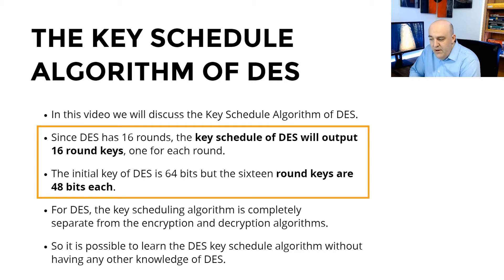Since DES has 16 rounds, that means the Key Schedule is going to be responsible for outputting 16 round keys, one for each round. So the initial key of DES is 64-bits, even though we're going to talk about later why it's really only 56-bits, but for now let's just say it's 64-bits.